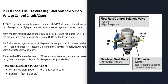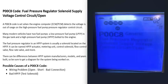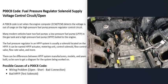Basically, these fuel pressure regulator solenoids are usually located directly on the high pressure fuel pump. It's always a good idea to get a wiring diagram for the specific vehicle being worked on so you know exactly what's going on.